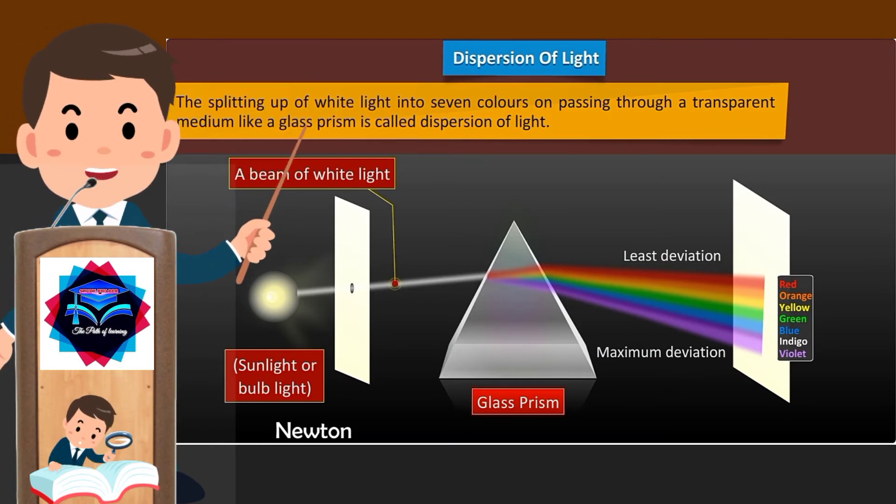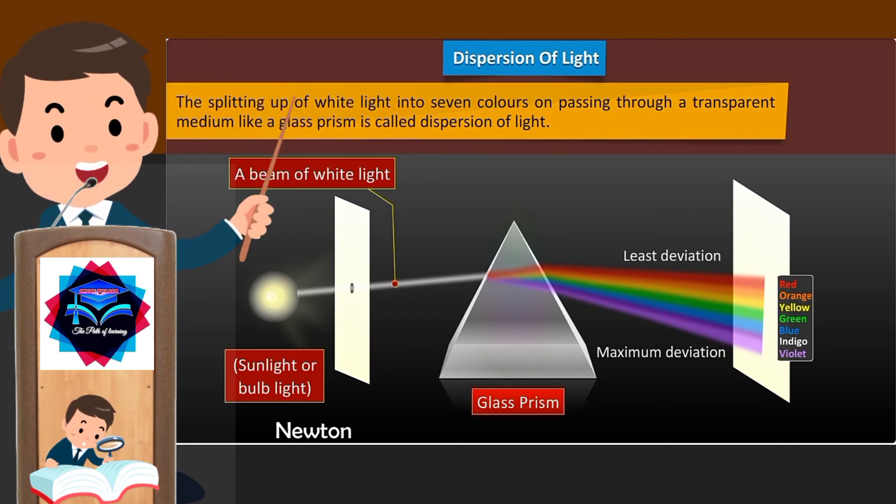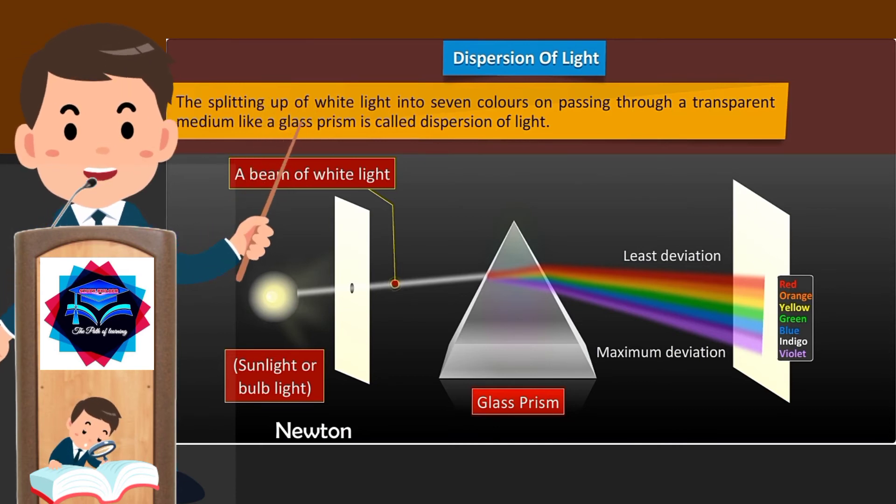So when white light consisting of seven colors falls on a glass prism, each color in it is refracted or deviated by a different angle, with the result that seven colors are spread out to form a spectrum.